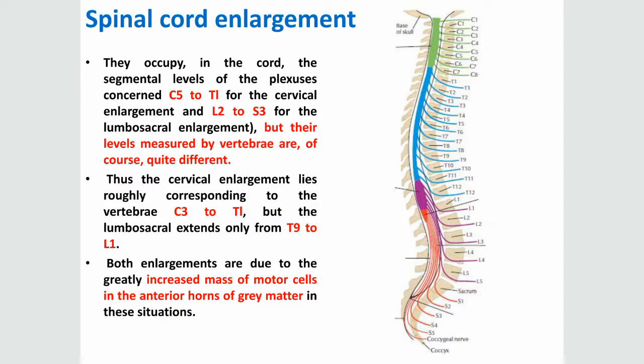These enlargements have segmental levels and vertebral levels, which are quite different. The segmental level of the cervical enlargement is from C5 to T1, and for the lumbosacral enlargement it is from L2 to L3. However, the vertebral levels for the cervical enlargement are from C3 to T1, and for the lumbosacral enlargement from T9 to L1.